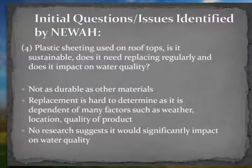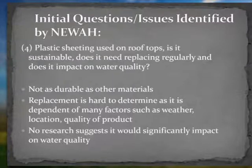The final question raised was what effect plastic sheeting on rooftops has on rainwater collection. Limited literature is available on this; however, it is obvious that the main concern with using plastic sheeting for rainwater harvesting is that it may not be as durable as other materials. There was no research that suggested it would significantly impact on the water quality.